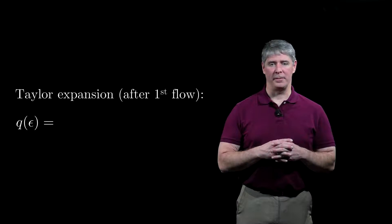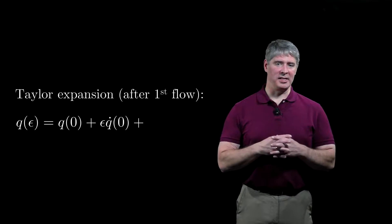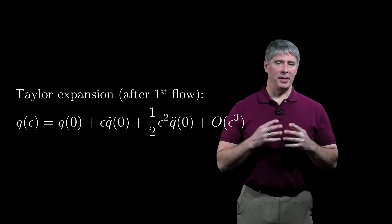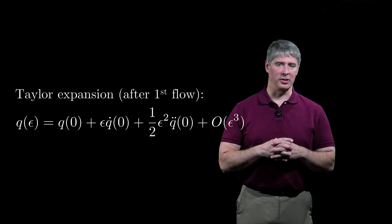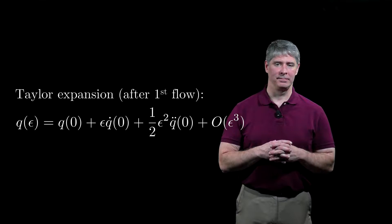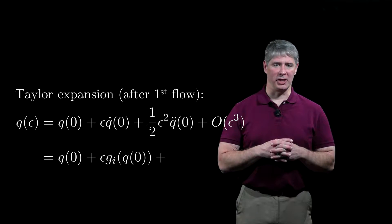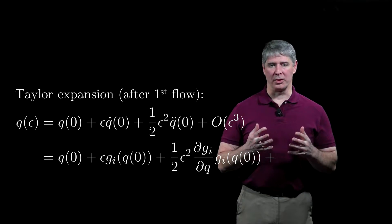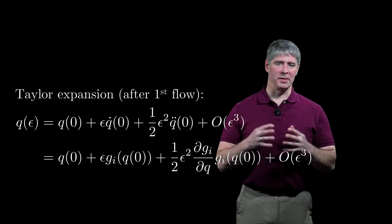After the first flow, the configuration q at time epsilon is the initial configuration q at time zero, plus the initial velocity times epsilon, plus one-half epsilon squared times the initial acceleration, plus terms of order epsilon cubed. Since epsilon is small, third and higher order terms are dominated by first and second order terms. We can rewrite this as the zeroth order term, plus the first order term replacing q-dot with the vector field g evaluated at the initial configuration, plus the second order term, where by the chain rule the acceleration q-double-dot is equivalent to dgi/dq times gi, plus terms of order epsilon cubed.